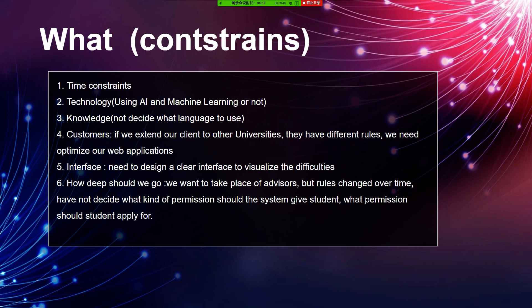There are some constraints. First is time constraints: we have seven to eight months to finish, and this is our first project involving a full software development process. We are confident we can make a minimum viable product, but not sure how far we can go. The second is technology constraints: we are considering using AI and machine learning technologies for recommending courses to students and analyzing prerequisites for different courses, but we are still learning and will face difficulties developing these features.